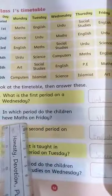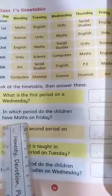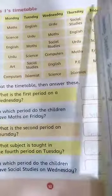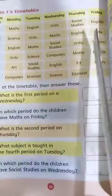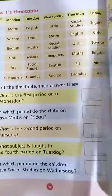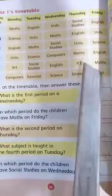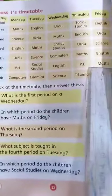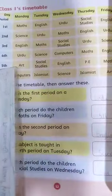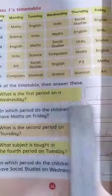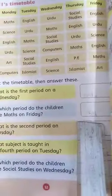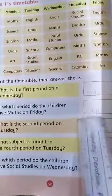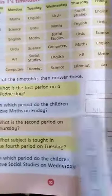In which period do the children have maths? English, Urdu, Science, English, Maths. On which period? Fifth. Write fifth in the box. In fifth period, the children do maths.